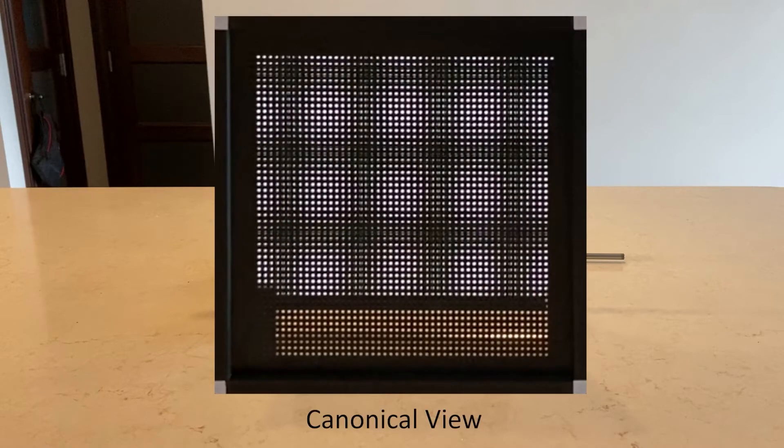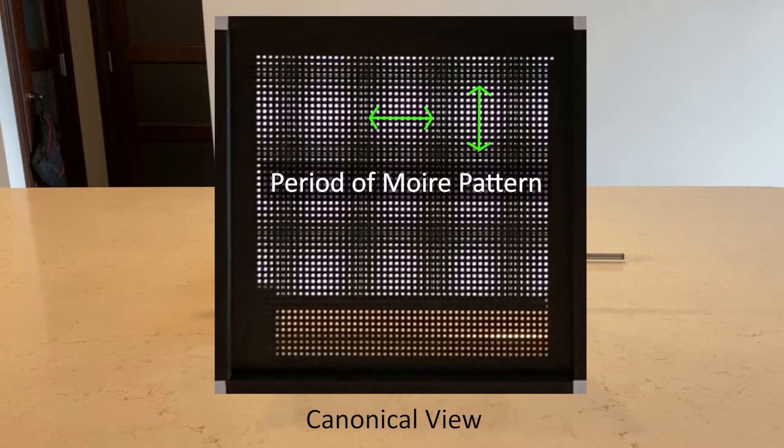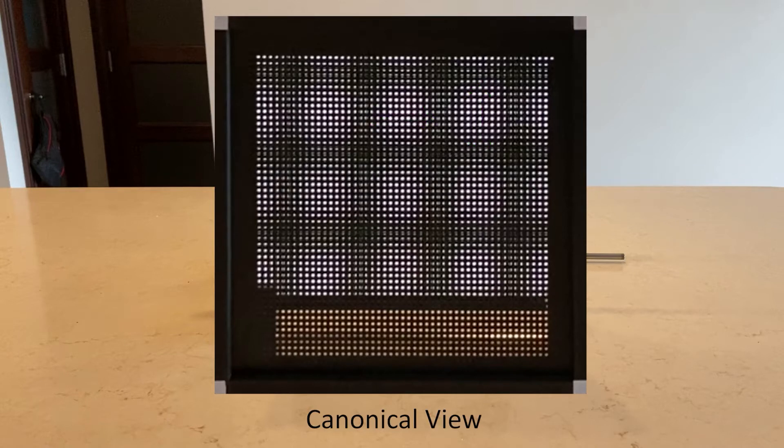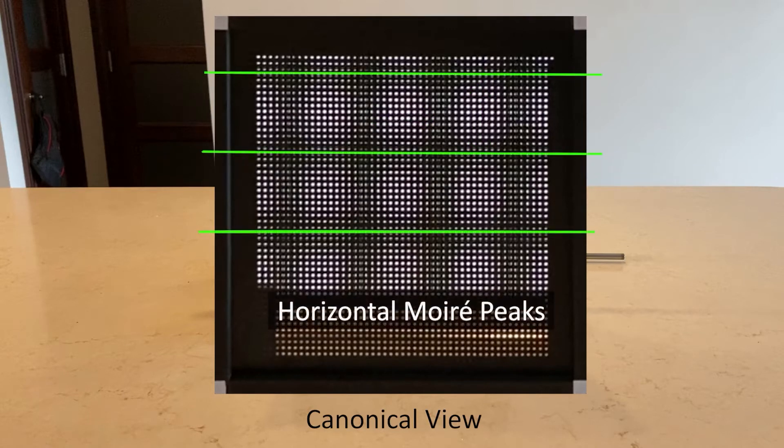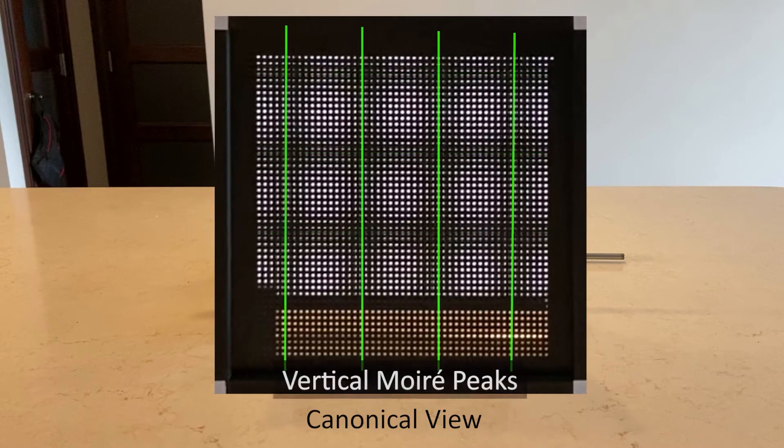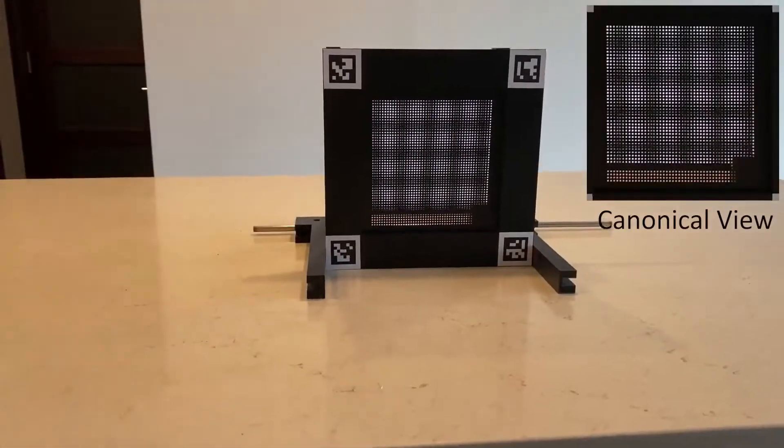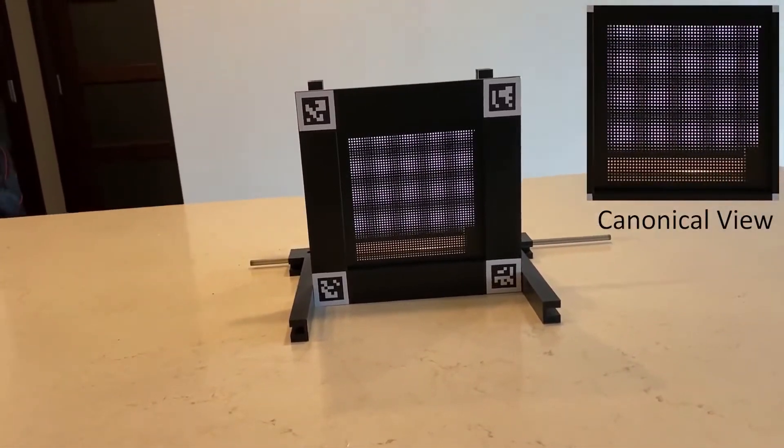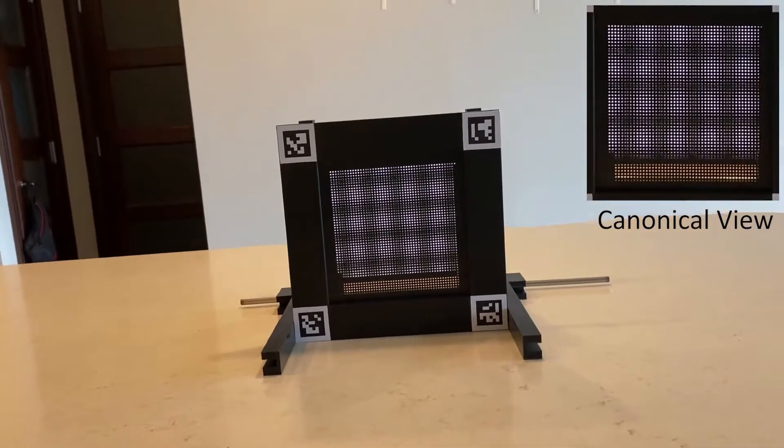Our theoretical analysis shows that, if we measure the period of the Moray pattern, and the pixel coordinates of each Moray peaks in horizontal and vertical directions, the 3D positions of the camera can be precisely calculated by using those quantities measured in the image space.